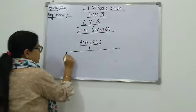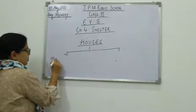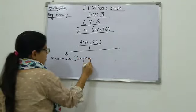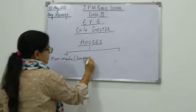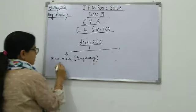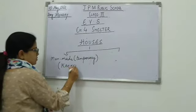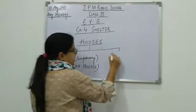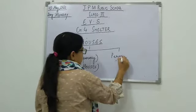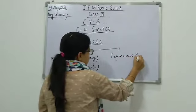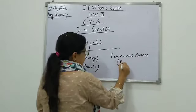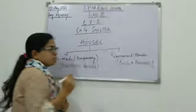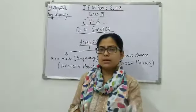Houses are of two types — manmade or temporary, that is kaccha houses, and permanent houses, that is pukka houses. Today we are going to do the next part of this chapter.